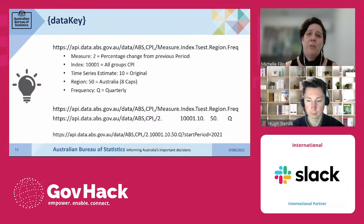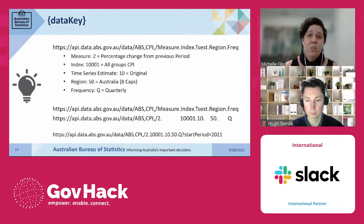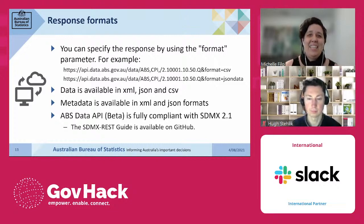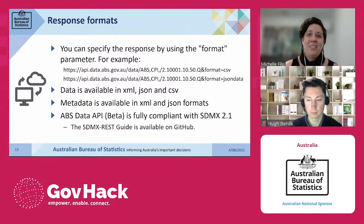You can also add a time period parameter. If you leave it blank, you get all time periods, but with a 2021 start period, you will only get 2021 data. You can go even further in your customisation by adding a response format. You can specify the call response by using the format parameter. Data is available in XML, JSON, and CSV, and if no format is selected, the API will return XML format. Metadata is available in XML and JSON formats. ABS API is fully compliant with the Statistical Data and Metadata Exchange 2.1 information model. The SDMX REST guide is available on GitHub.